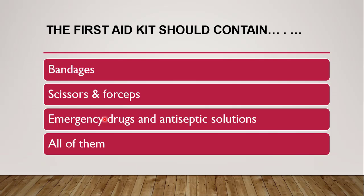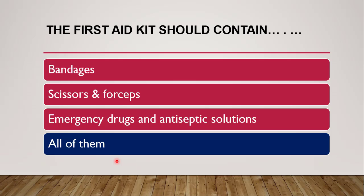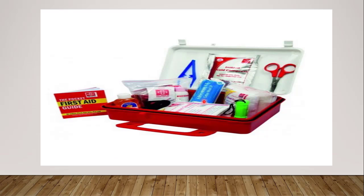Next question: the first aid kit should contain — bandages; scissors and forceps; emergency drugs and antiseptic solutions; or all of them? The correct answer is all of them. The first aid kit contains scissors, forceps, bandages, a first aid guide or small manual, antiseptic solution, and a few general medicines.